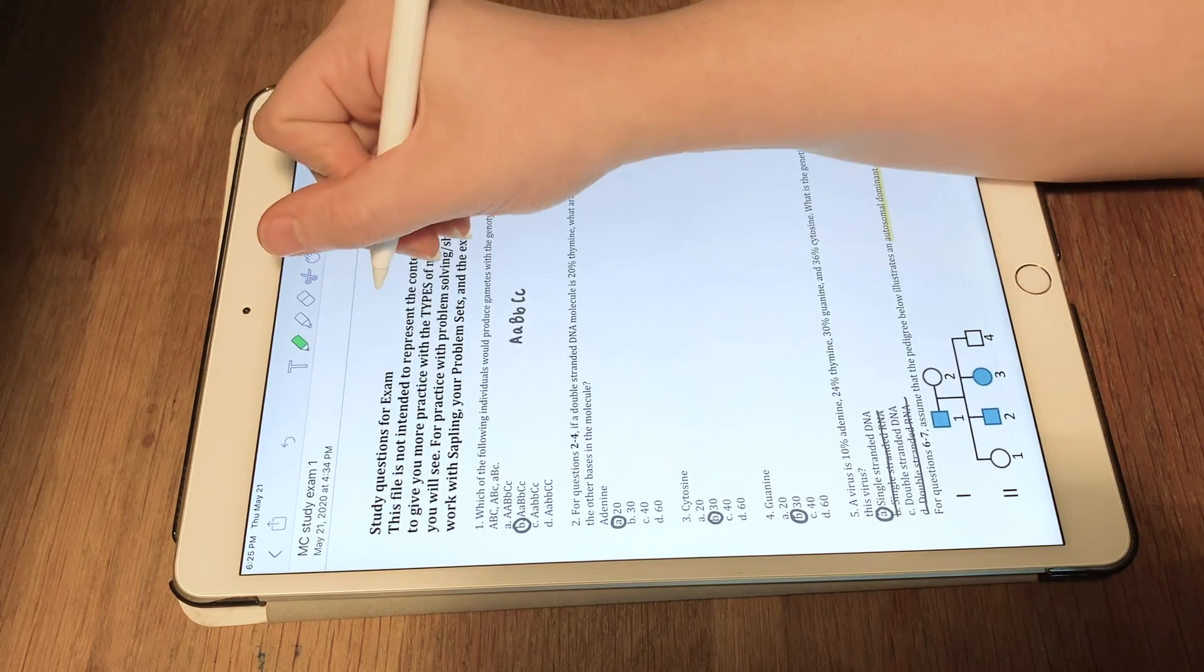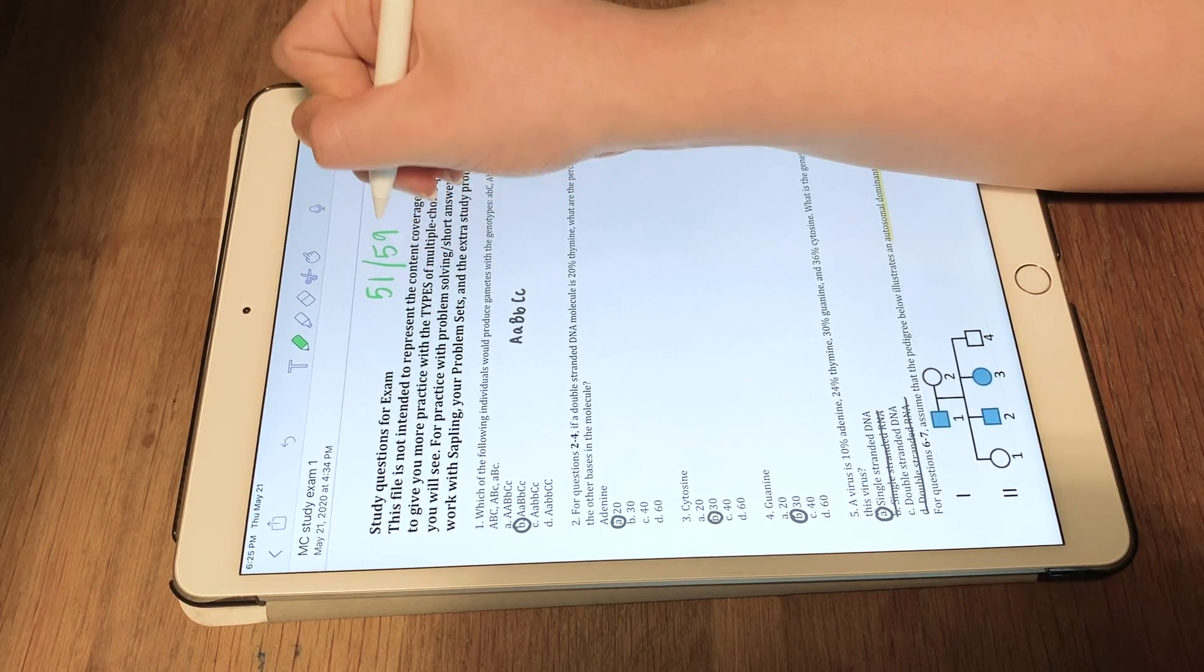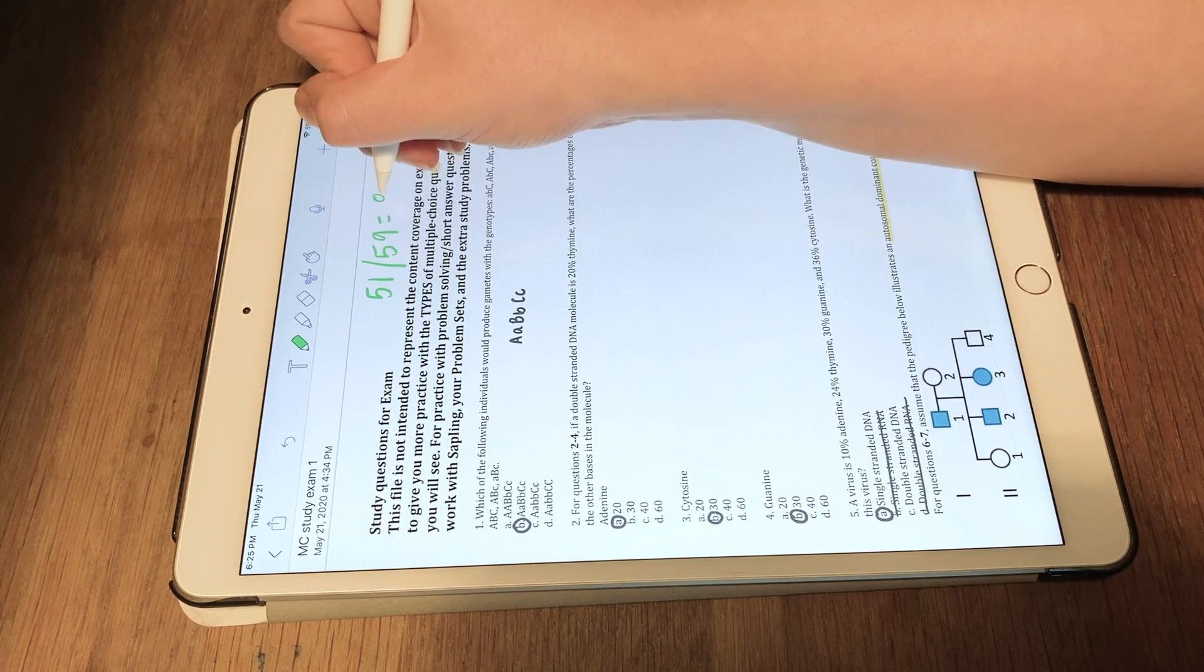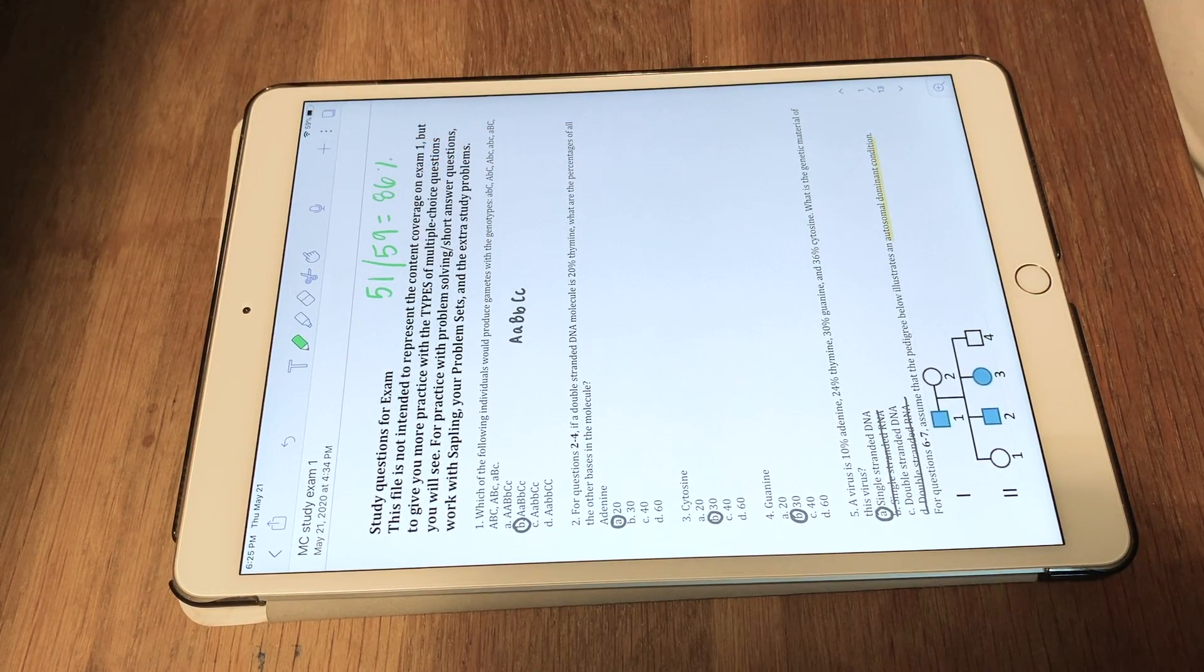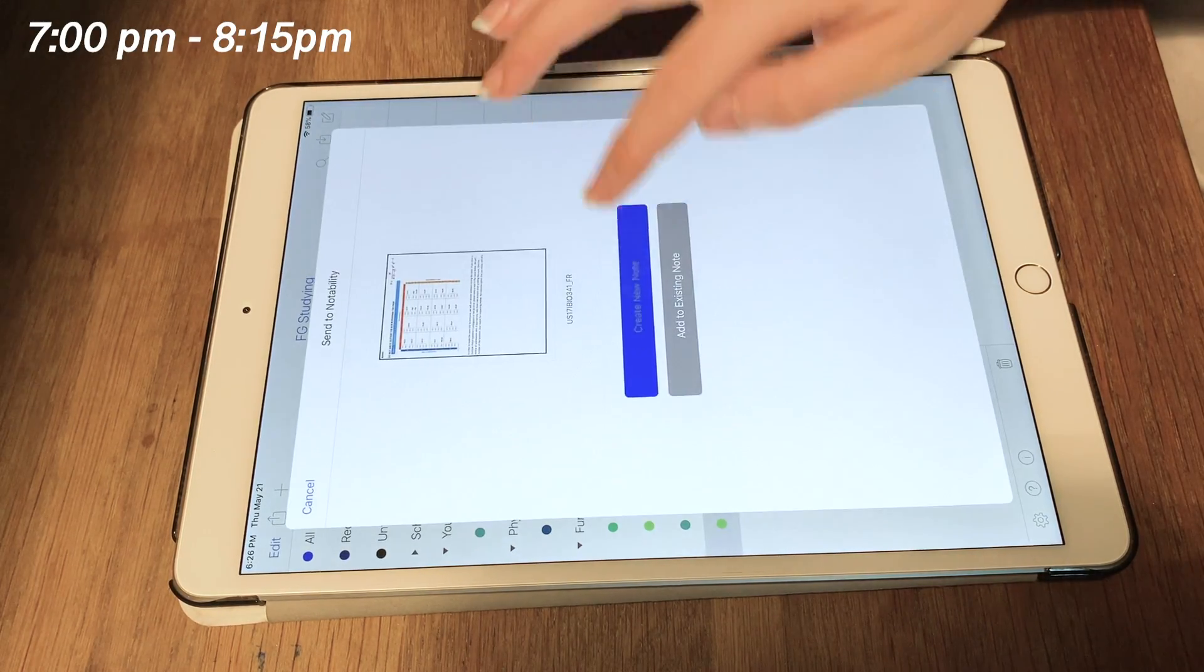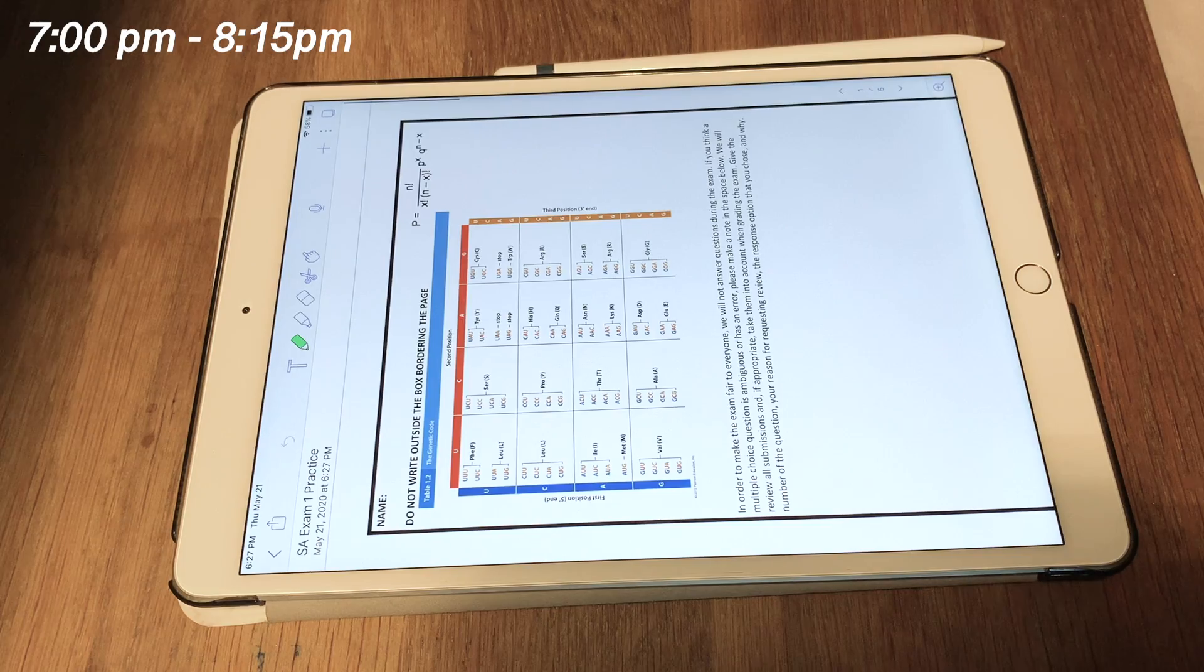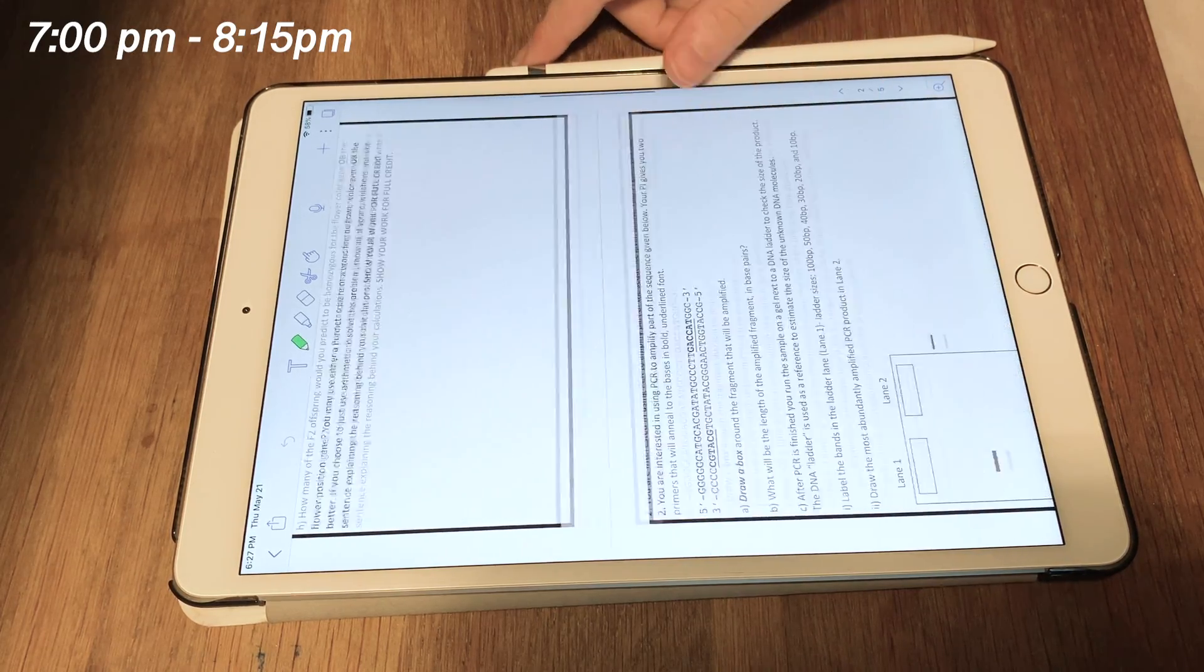On the practice exam I got a 51 out of 59 which ended up being an 86, which I was really happy with. This is the most failed class of my major so I was really happy that I got a pretty good score on the practice exam. Next I'm moving to the practice short answer which was a little bit harder.